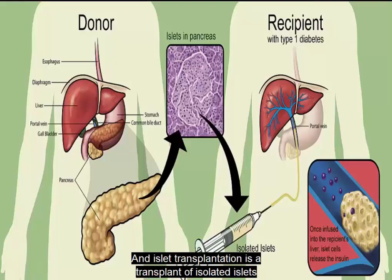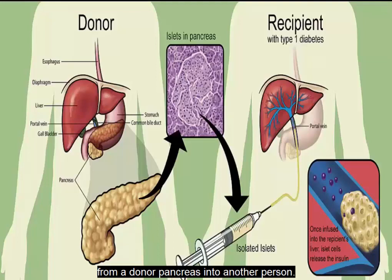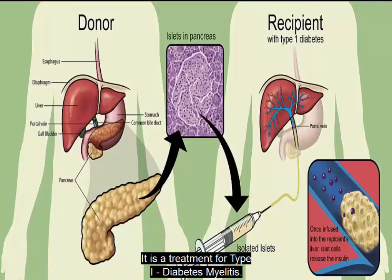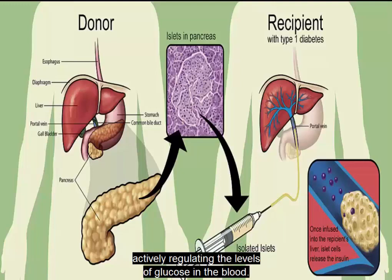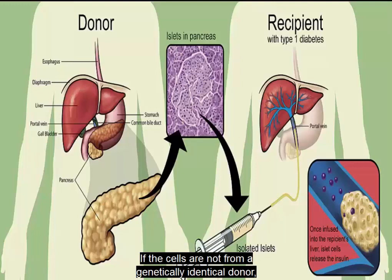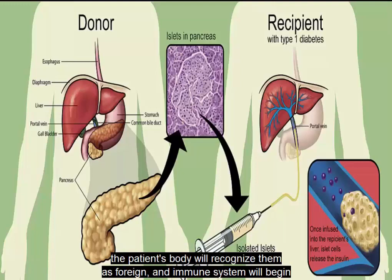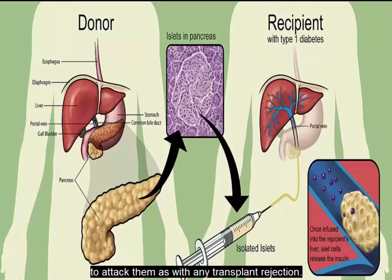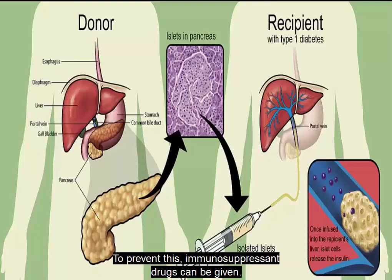An islet transplantation is a transplant of isolated islets from a donor pancreas into another person. It is a treatment for type 1 diabetes mellitus. Once transplanted, the islets begin to produce insulin, actively regulating the levels of glucose in the blood. Islets are usually infused into the patient's liver. If the cells are not from a genetically identical donor, the patient's body will recognize them as foreign and the immune system will begin to attack them as with any transplant rejection. To prevent this, immunosuppressant drugs can be given.